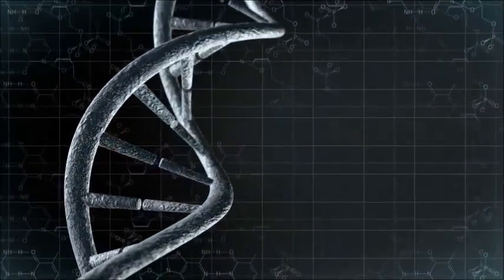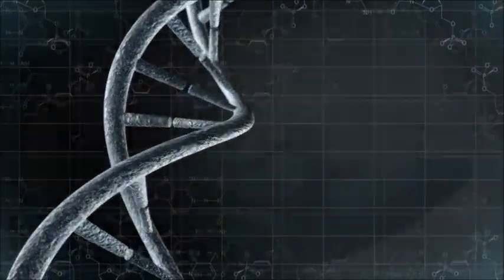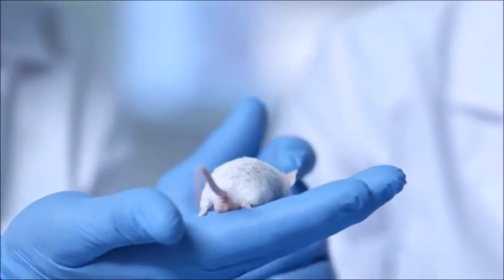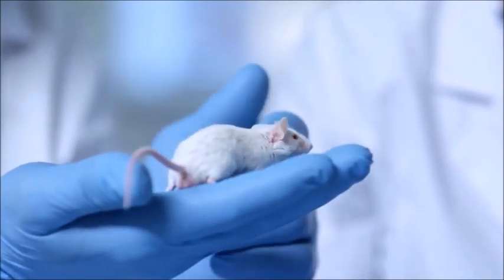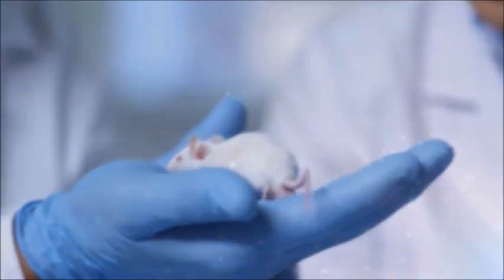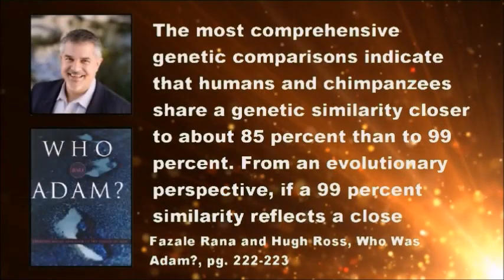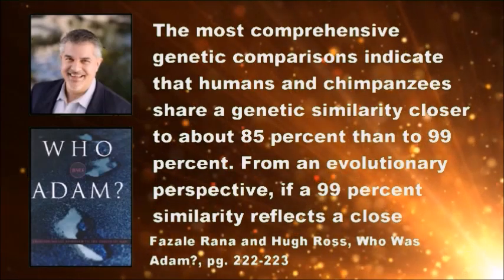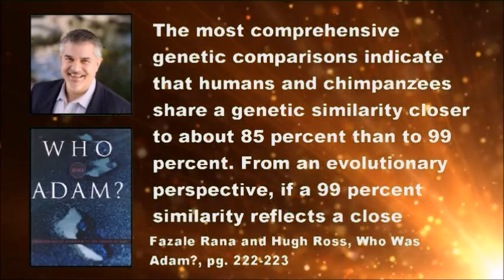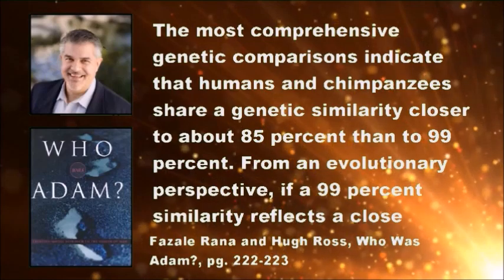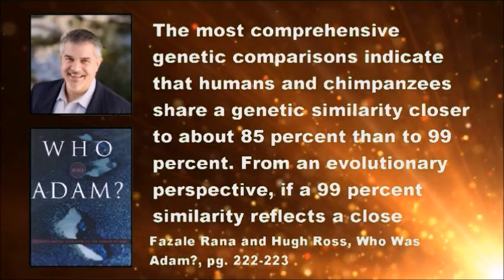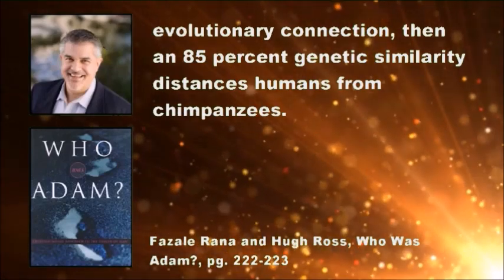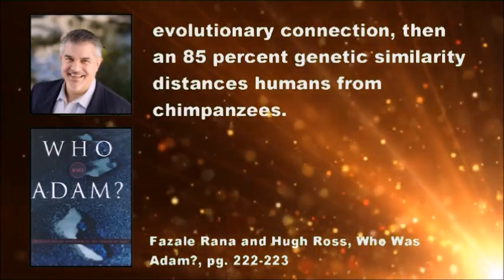It's not even clear that more similar DNA indicates closer ancestry. Consider that a common mouse has some genes that are also 99% similar to humans, yet humans are not considered to be very closely related to mice. Fazale Rana and Hugh Ross say: The most comprehensive genetic comparisons indicate that humans and chimpanzees share a genetic similarity closer to about 85% than to 99%. From an evolutionary perspective, if a 99% similarity reflects a close evolutionary connection, then an 85% genetic similarity distances humans from chimpanzees.